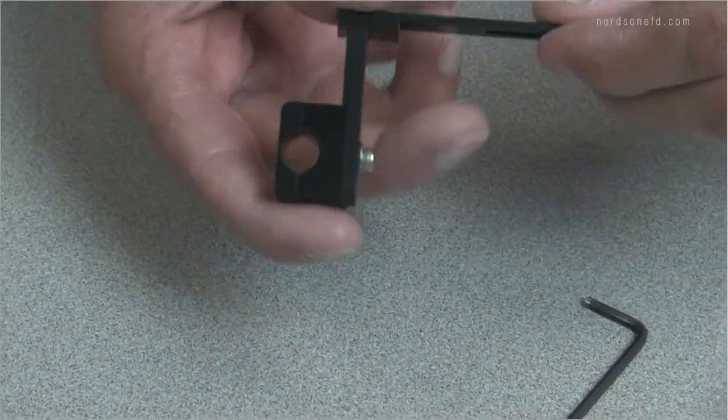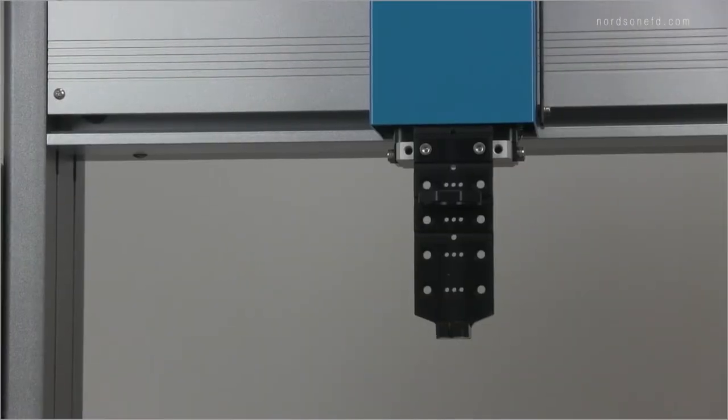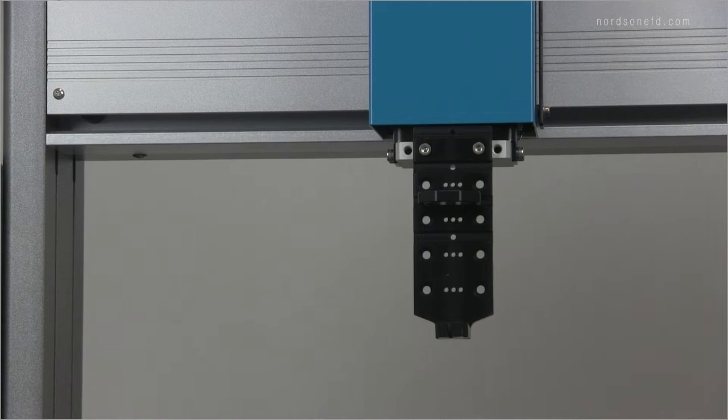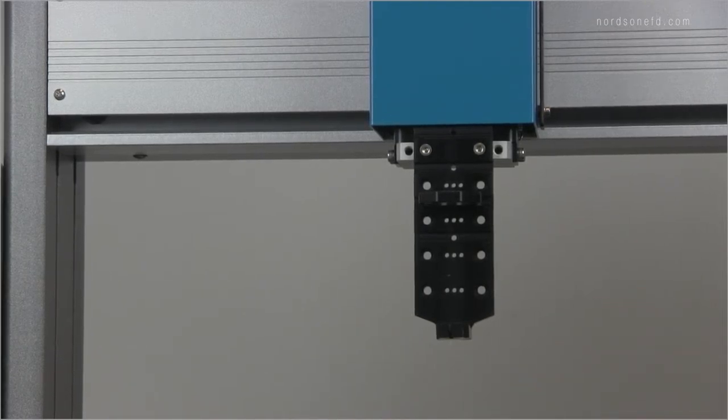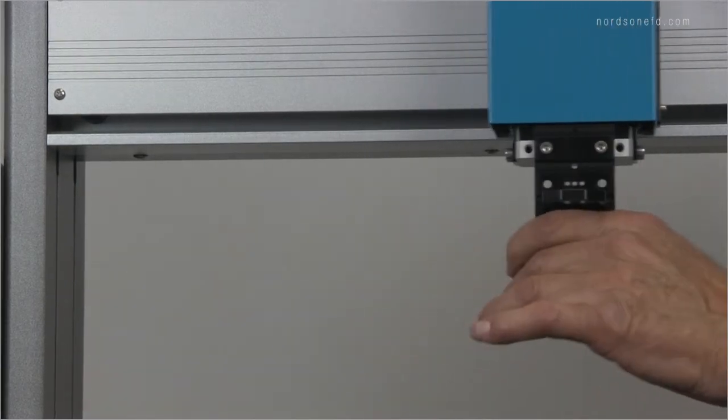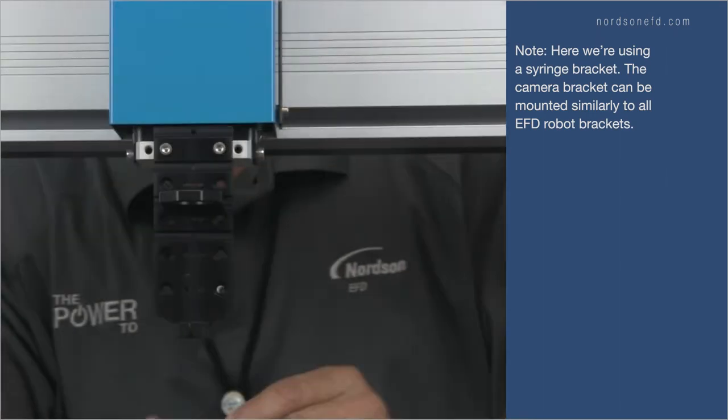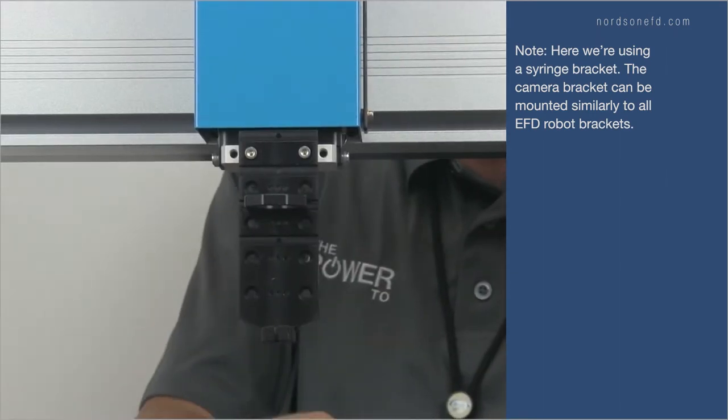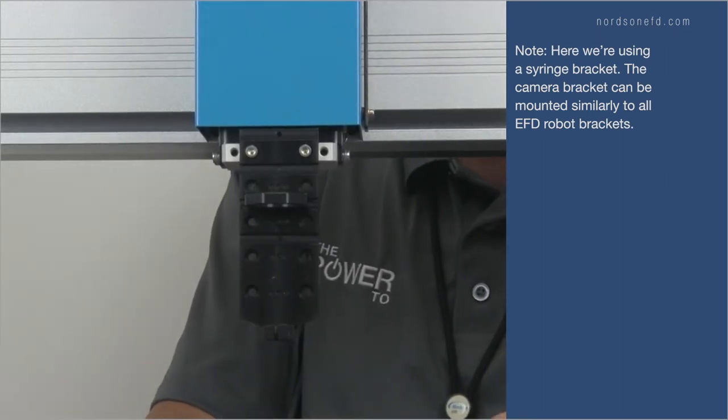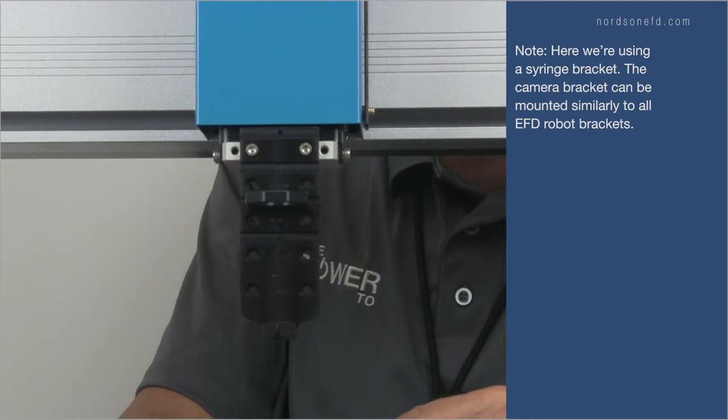Nice and tight, so we're ready to go on to the robot. Now we're going to install the simple vision bracket onto our dispense bracket. Before we do that, we're just going to make sure that the robot is e-stopped, so that everything can be moved by hand. I'll work on the back of the robot here. There are two screws on the side of the bracket that loosen it, so let's go ahead and crack those while we've got it off the robot.